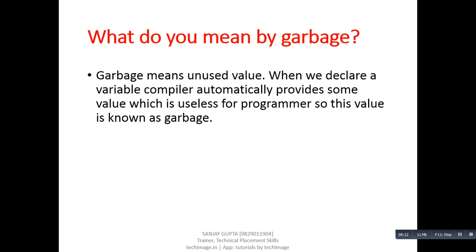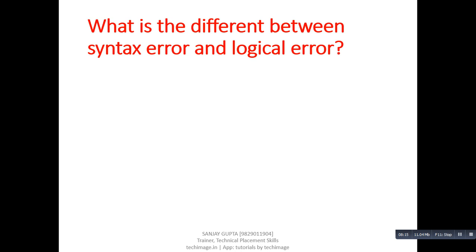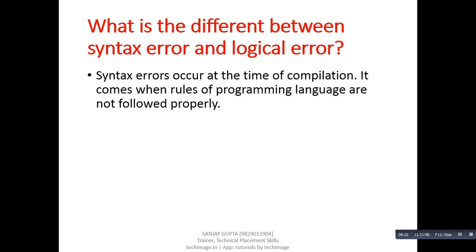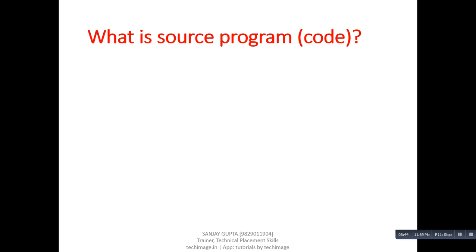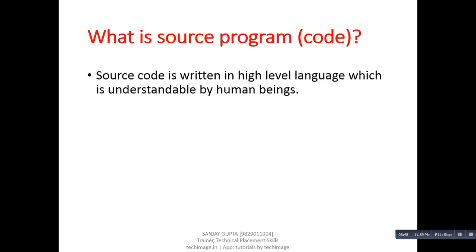Next question: what is the difference between syntax error and logical error? Answer: syntax errors occur at the time of compilation; they come when rules of the programming language are not followed properly. Logical errors occur at the time of execution; they come when logics are not properly implemented in the program. Next question: what is source code? Answer: source code is written in a high-level language which is understandable by human beings. The programmer saves source code with a .c extension.